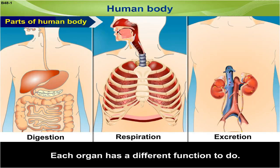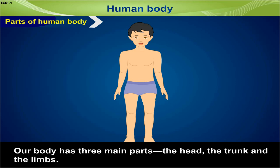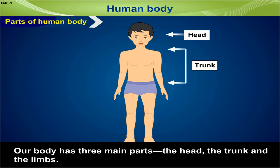Each organ has a different function to do. A body has three main parts — can you guess what they are? They are the head, the trunk, and the limbs. Let's have a look at them one by one.